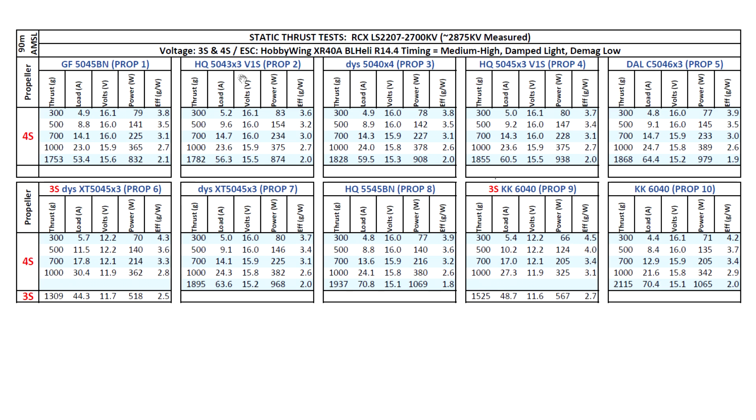Then moving on to the 50-43x3 prop. Slightly higher thrust, that's 1782. Amps keep climbing, of course, with thrust, the amps are going to climb. Then we move on to the 50-40x4 props. 1828 at nearly 60 amps, so quite a lot of amps out of this motor. Mainly, of course, because of the very high KV. Of course, high KV, high thrust, and high amps, those go hand in hand. Then we move on to the 50-45x3 HQ B1S. 1855 at 60.5 amps. Again, that's quite a lot of thrust right there.